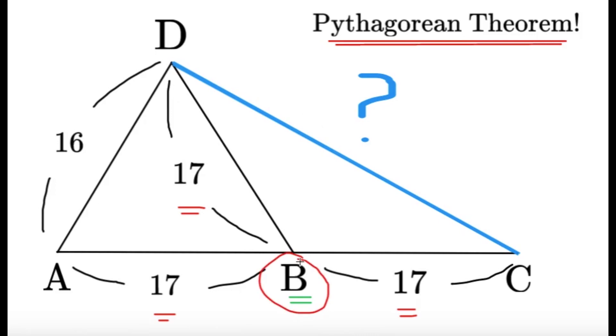Now, what's so special about point B? Point B is equidistant to points A, D, and C. Look, AB equals 17, BC equals 17, and BD equals 17. Now, B is on AC, and in fact, it's the midpoint. So something's nice about this because,